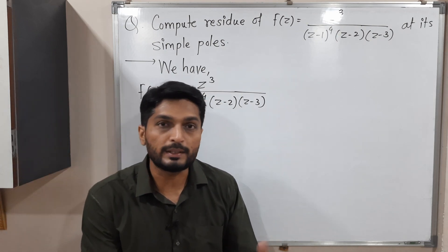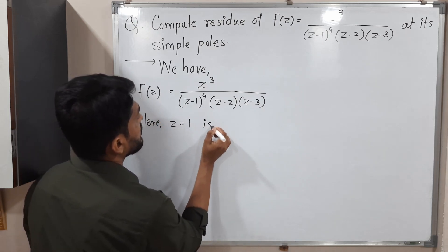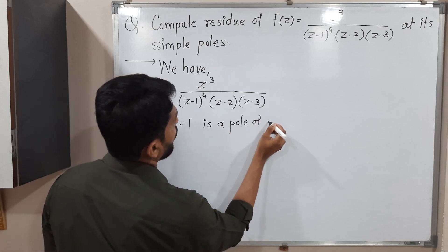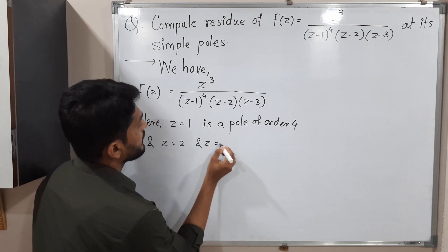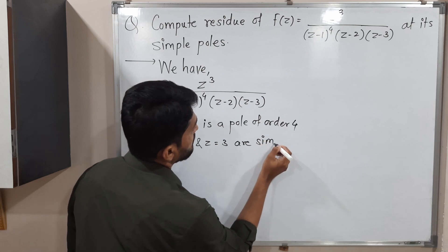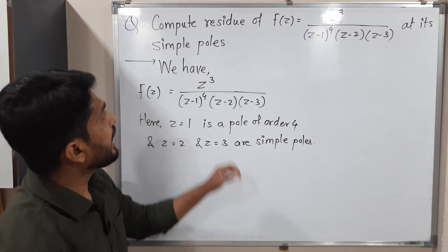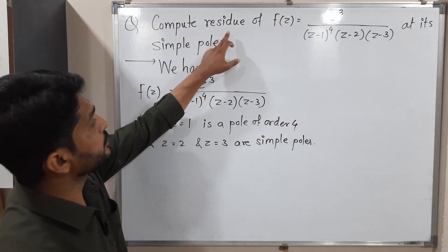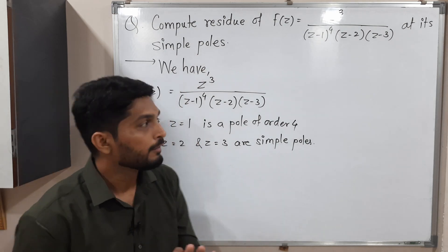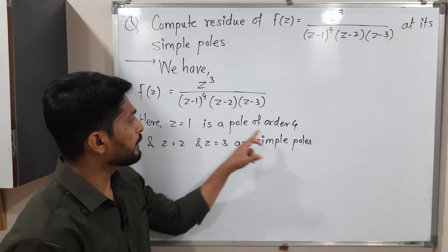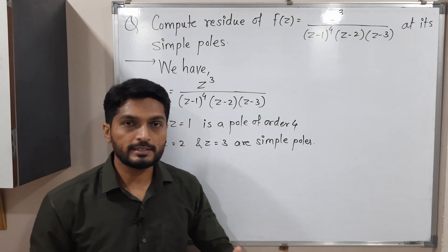So let me clearly mention what are the poles with their orders. z equal to 1 is a pole of order 4. z equal to 2 and z equal to 3 are simple poles — simple poles means pole of order 1. What they have asked is to find residue only at the simple poles, so we will not go for z equal to 1. These are the two simple poles, so I will find residue only at these poles.